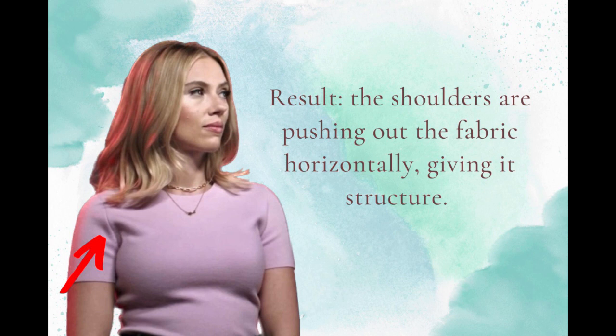If neither the shoulders nor the bust is doing anything and the fabric is just falling straight down, then you are an image identity that needs to accommodate vertical — except for soft dramatic, of course, which has both. The vertical for soft dramatic is accommodated in the lower body. So if you see the fabric going straight down, not being affected by width or the bust, then you are a dramatic, a flamboyant gamine, or a dramatic classic.